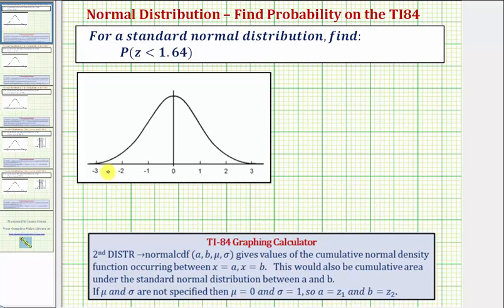Looking at the graph of the standard normal distribution shown here below, notice z equals 1.64 would be approximately here.